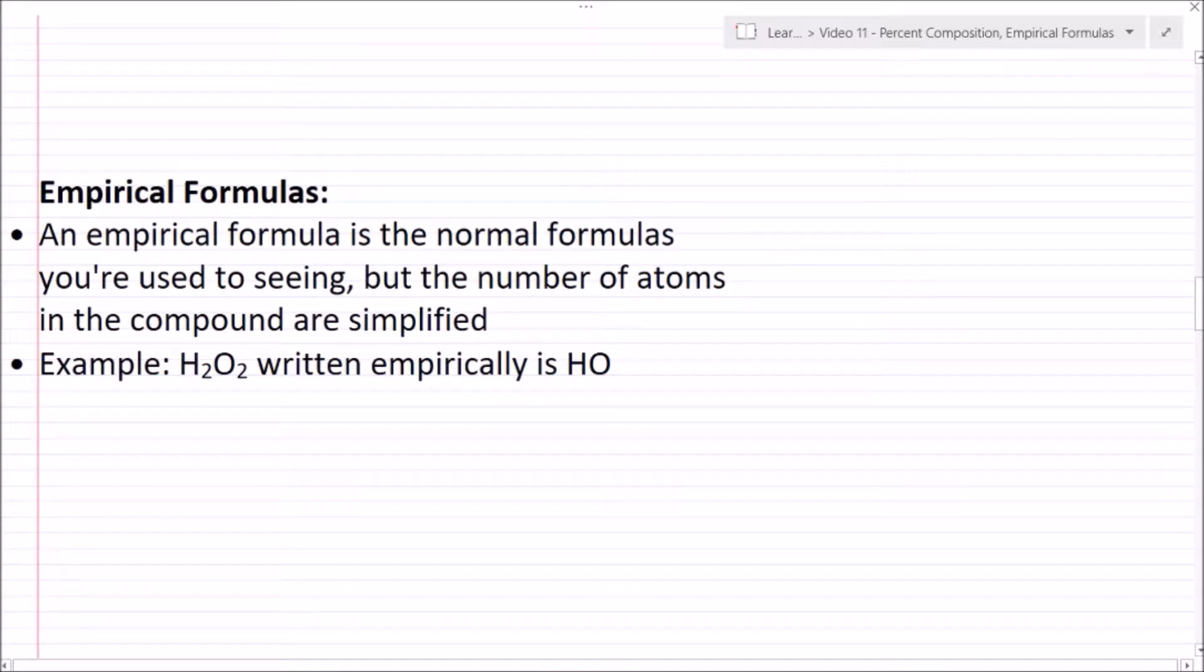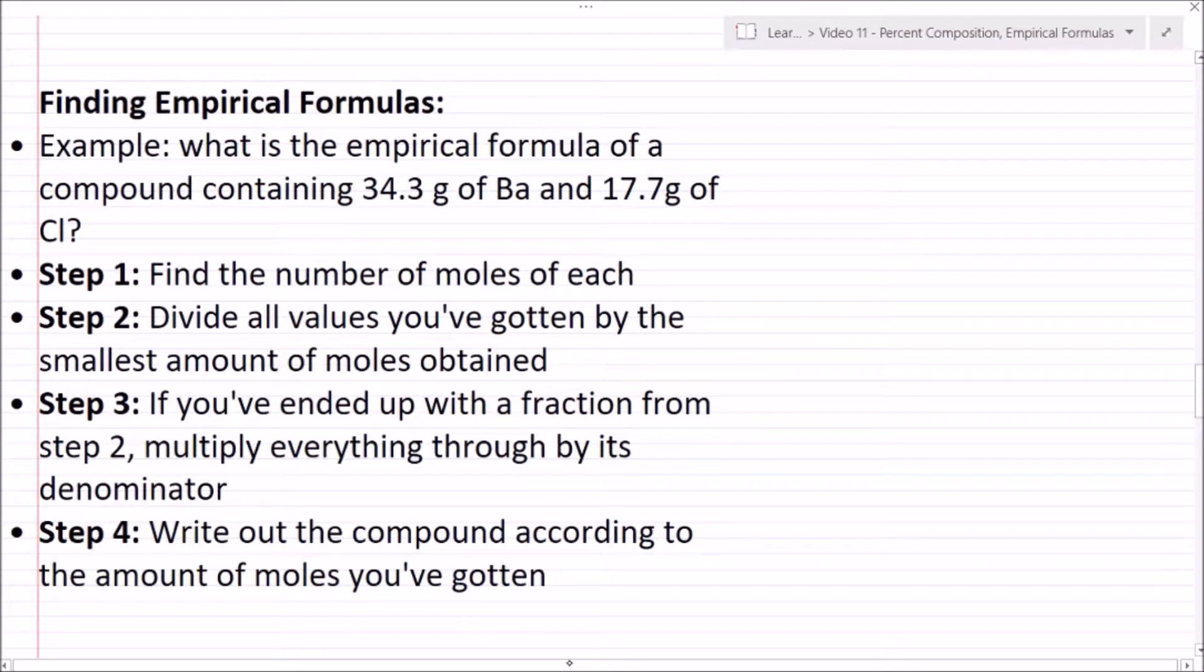Okay, so let's talk about finding empirical formulas now. A lot of times on the AP test you'll be asked to find the empirical formula of a mystery compound. So how would you do that? Let's take our first example here: what is the empirical formula of a compound containing 34.3 grams of barium and 17.7 grams of chlorine?